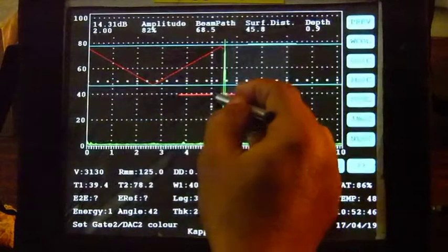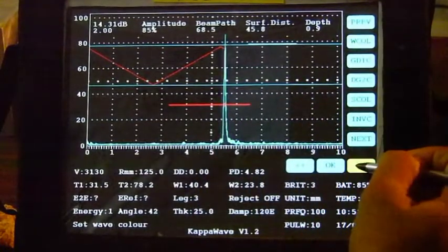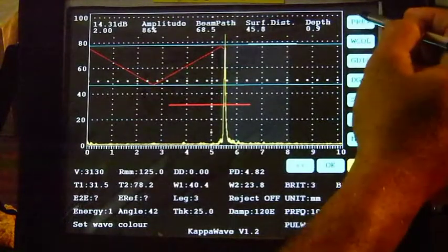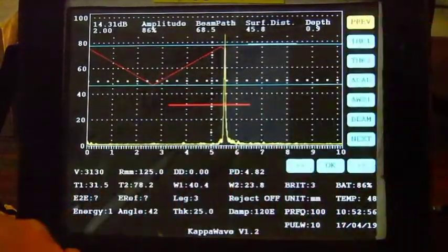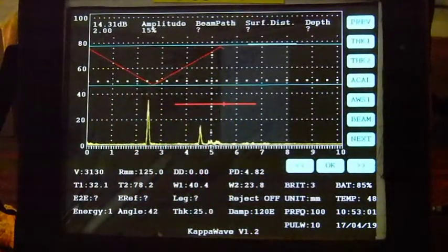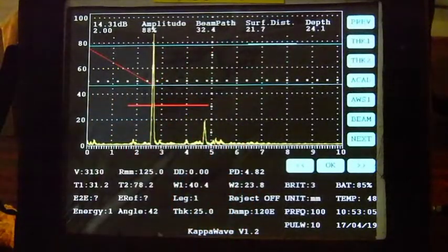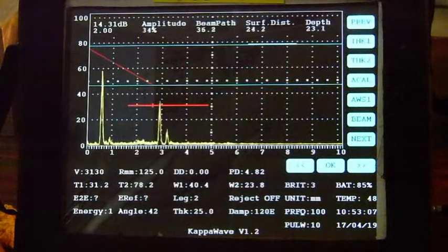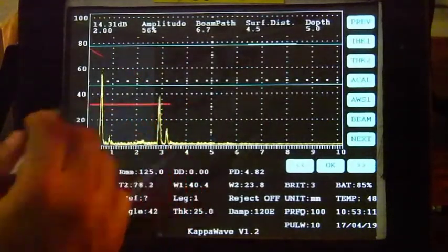This shows a full beam reflection. Whereas this shows a corner, bottom corner. And this may probably be from an internal defect.